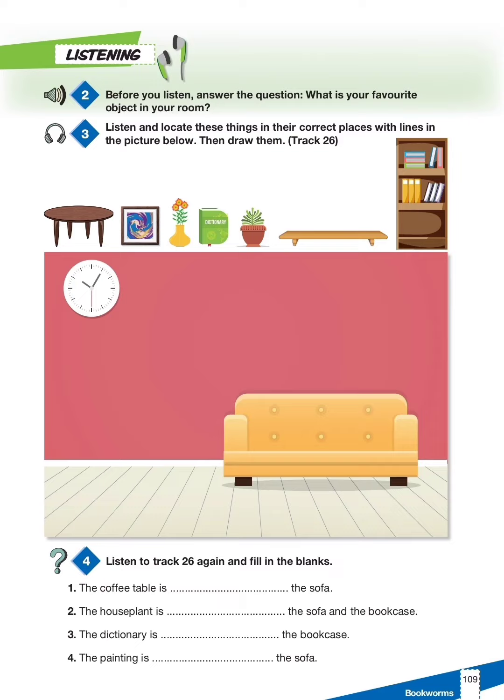Track 26, unit 8, Bookworms, page 109. Exercise 3: listen and locate these things in their correct places with lines in the picture below, then draw them.